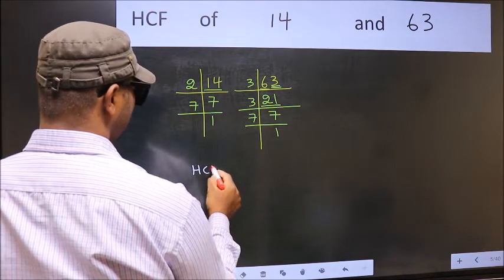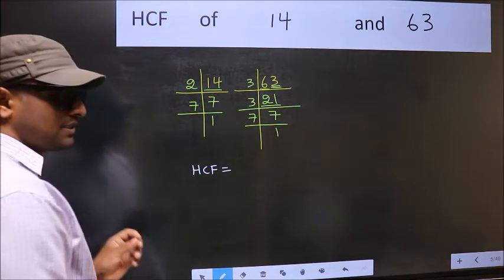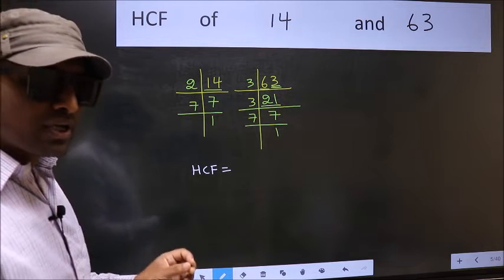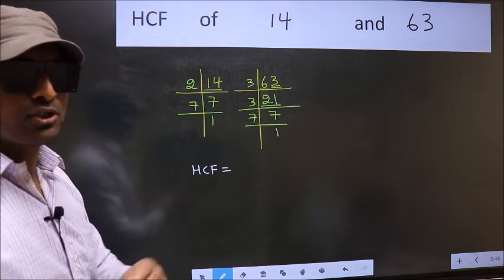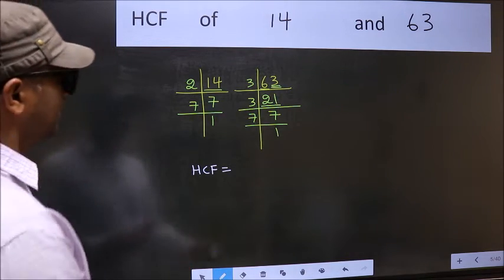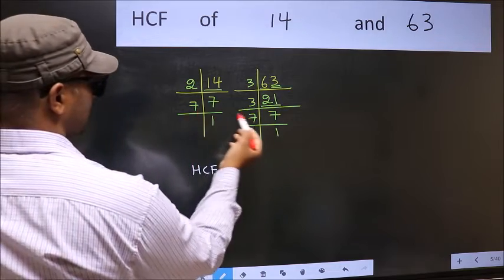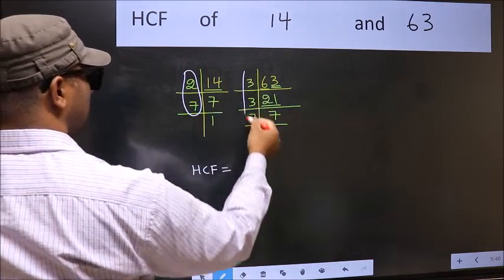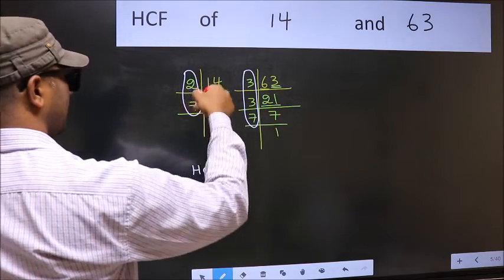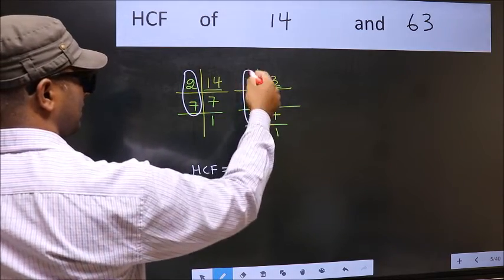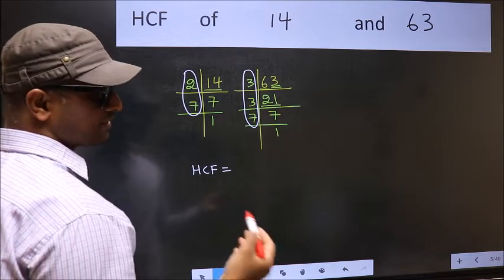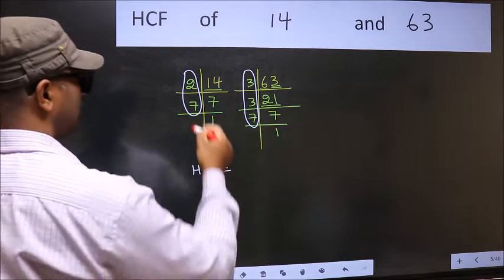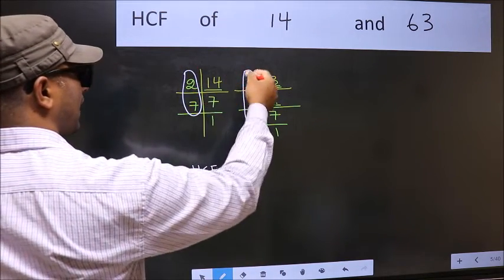Therefore, our HCF is the product of the numbers which should be present in both places. That is here and also here. So now let us find the numbers which should be present here and here.